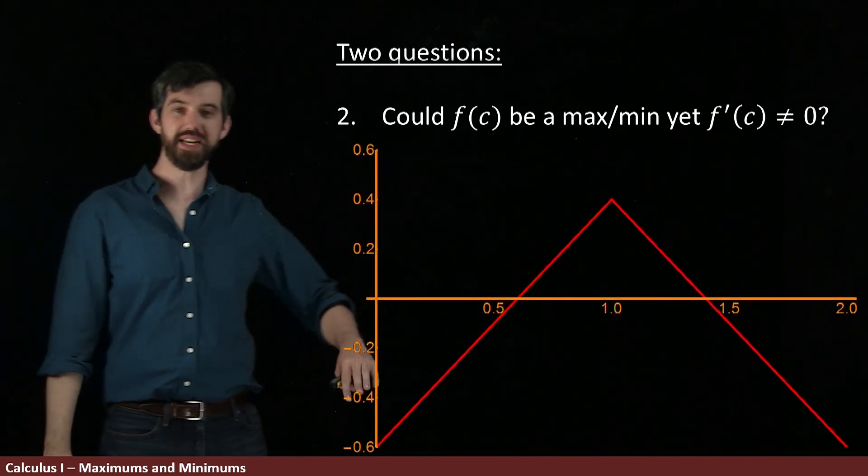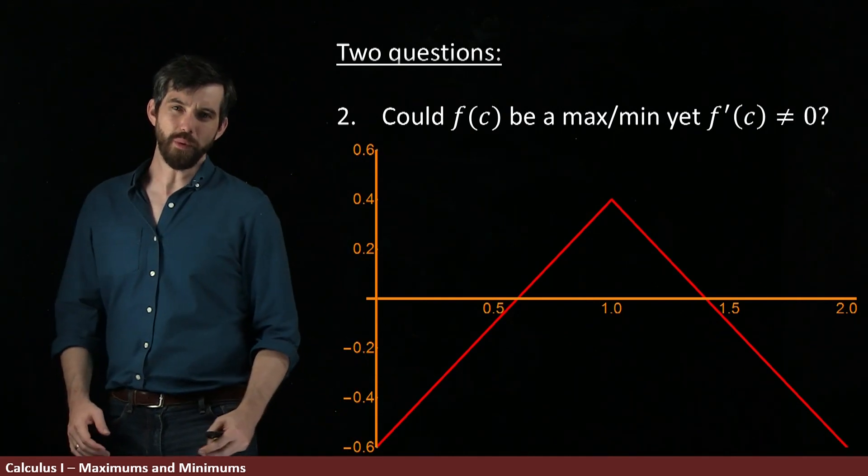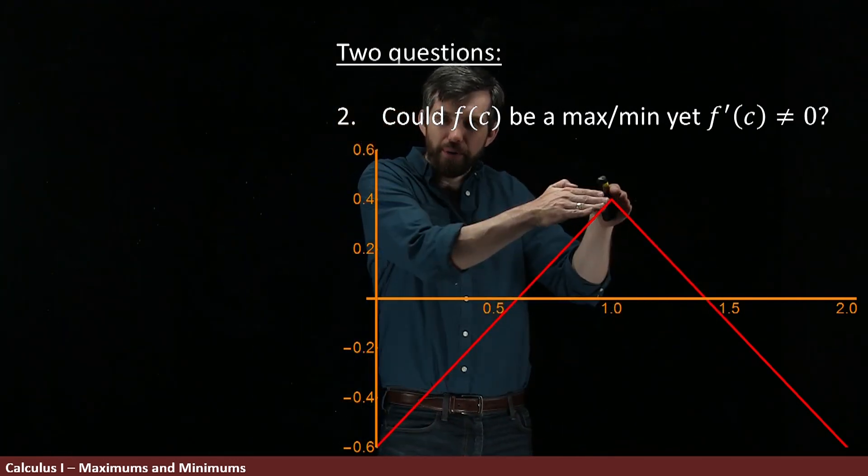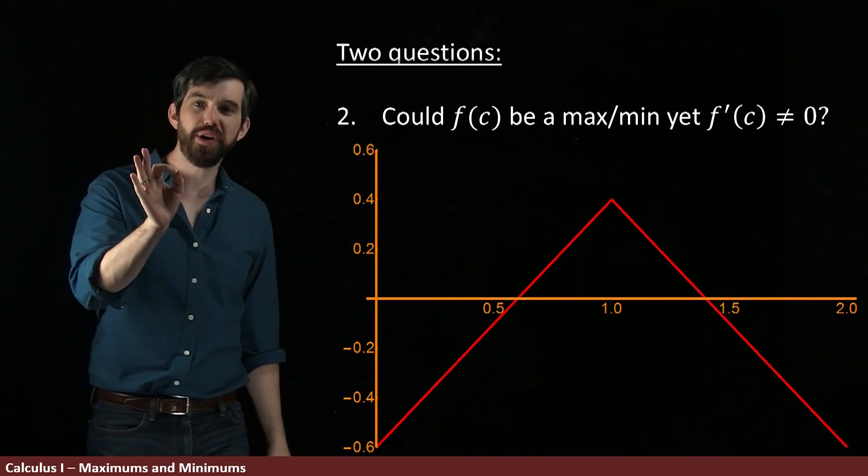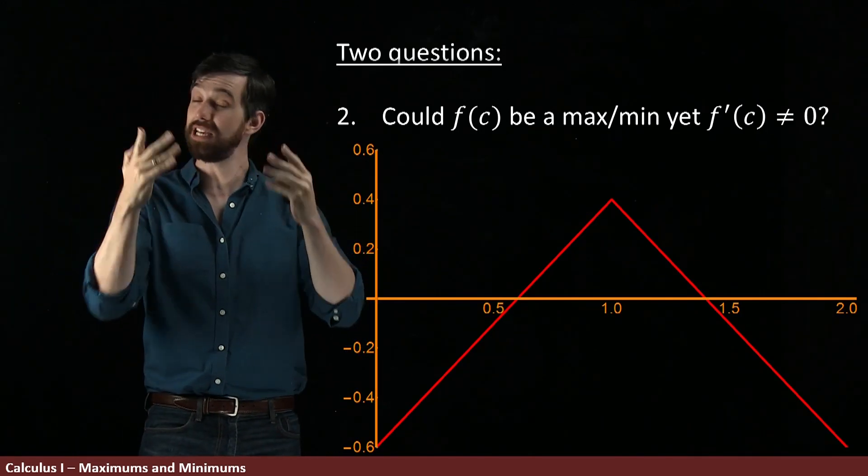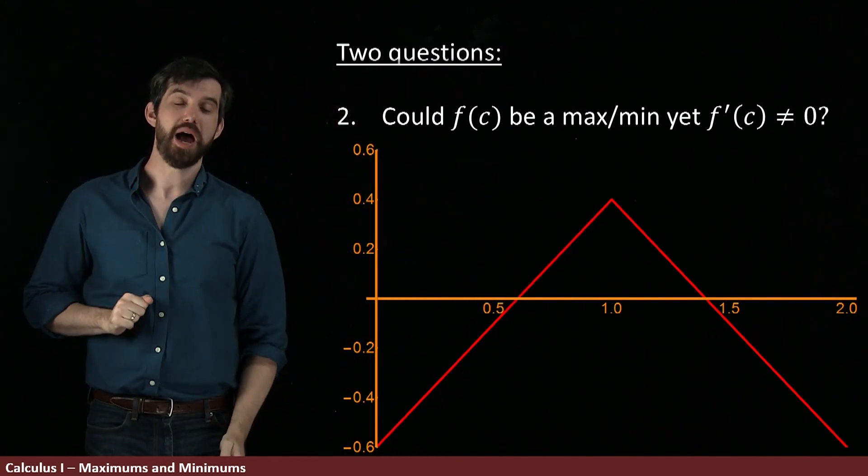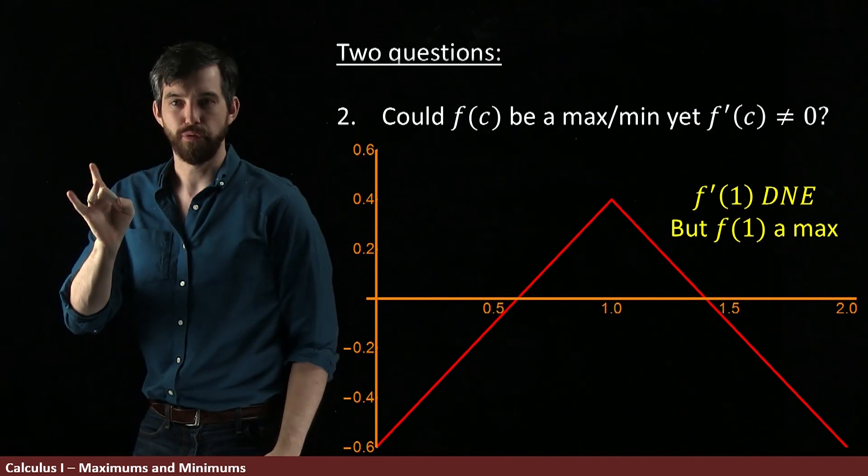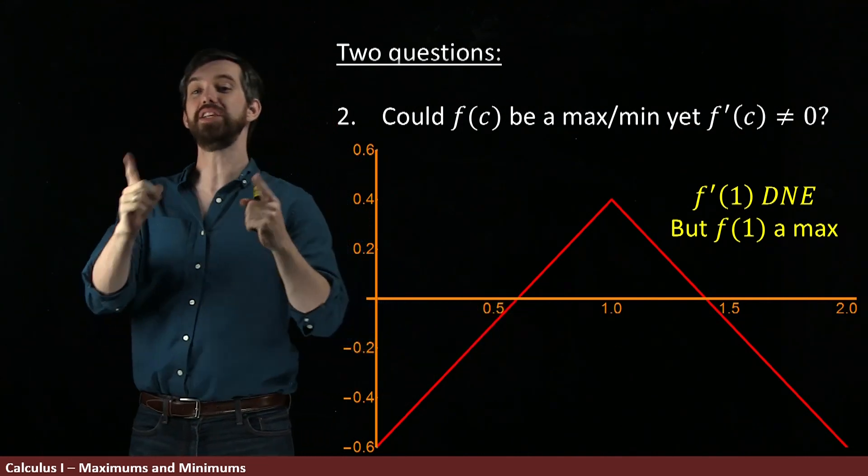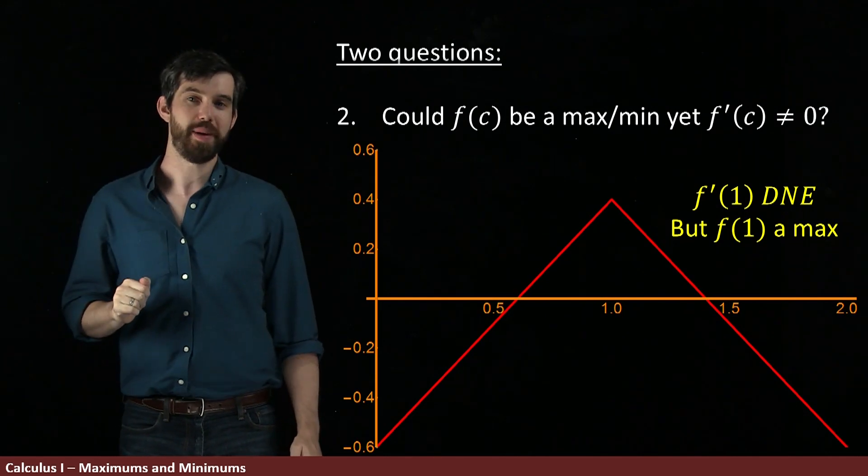Let me look at this example. So this is an example that has some sort of absolute value in it. And what we have here is this corner right at the top. One of the things that we know is that the derivative at any cusp point does not exist. Yet clearly from our picture, that looks like a maximum. So I will say that f prime of one, the derivative at the value of one does not exist, even though f of one itself is still a maximum.